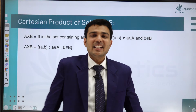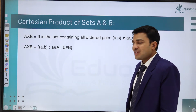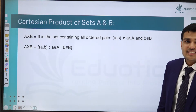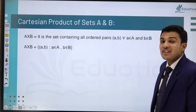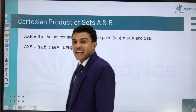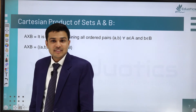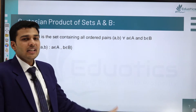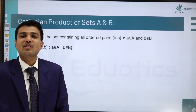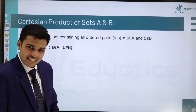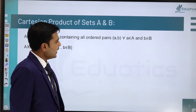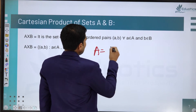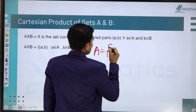To understand non-functional mappings, we need to discuss a new terminology: the Cartesian product of sets A and B. To understand this, let's take a basic example with two sets.